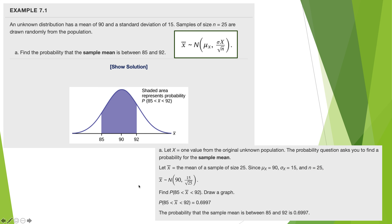Here's how to do this on a graphing calculator. Let x equal a value from the population. The problem asks for the probability for the sample mean — we know that because it says x-bar and mentions a mean of 90, standard deviation, and sample size. So: x-bar tilde Normal with mean = 90, standard deviation = 15 over the square root of n, where n = 25. Again, this is putting all the dishes where they belong before we cook up the answer.